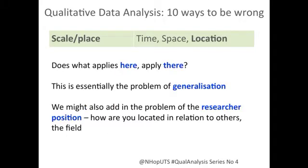Then there's location — really a question of what applies here applies there. This could be understood as a problem of generalisation: what I found in this situation, can I say it's likely or certain or unlikely to happen somewhere else? But we could also say this is to do with the location of the researcher — how you are situated in relation to others in the field. In my experience, that's been as an adult who's not a teacher in schools trying to do research with young people, or as a male non-parent in very female and parent-dominated services. There are all sorts of things to do with being an insider, being an outsider, issues of age, gender, race, and building trust. Location is a tricky one.